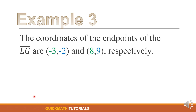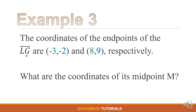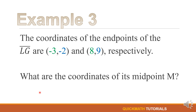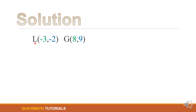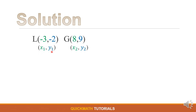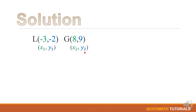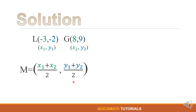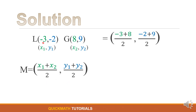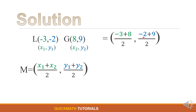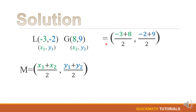And for our last example, the coordinates of the endpoints of the line segment LG are negative 3 and negative 2, and 8 and 9 respectively. What are the coordinates of its midpoint M? For our solution, let L be our first point so we have x sub 1 and y sub 1, and point G as our second point so we have x sub 2 and y sub 2. Using the midpoint formula, we have our x sub 1 is equal to negative 3 plus our x sub 2 is equal to 8, comma, our y sub 1 is equal to negative 2, and our y sub 2 is equal to 9.